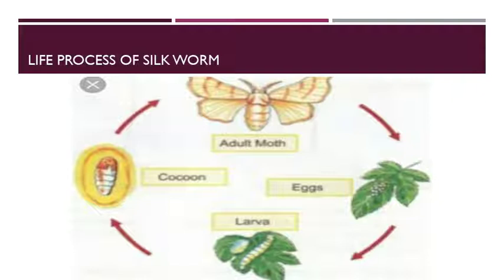Before moving to the next stage, it spins a solid cocoon around its body and changes to the next stage — the pupa — inside the cocoon. The cocoon takes about 3 days to be fully complete.